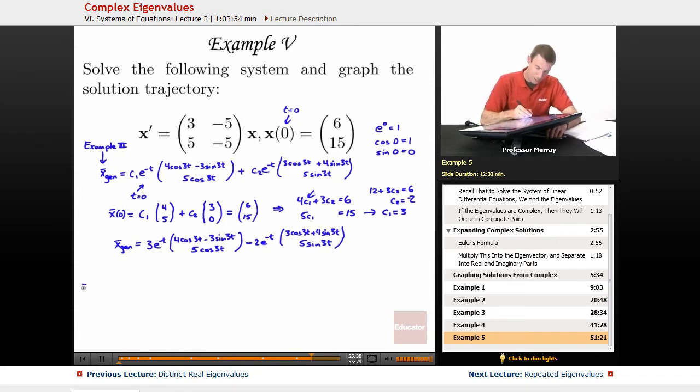And I think I can combine those together, so I'll have e to the negative t everywhere. If I look in the top, I've got 3 times 4 cosine, that's 12 cosine, and minus 6 cosine, so that leaves me with a net of 6 cosine 3t. Then minus 9 sine and minus 8 sine, so minus 17 sine 3t. In the bottom, I've got 15 cosine 3t minus 10 sine 3t. So that's my solution.